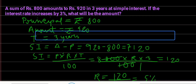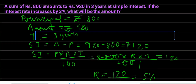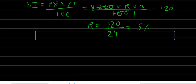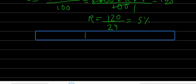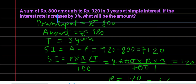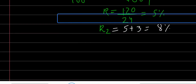The question states that if the interest rate increases by 3 percent, the new rate R2 equals 5 plus 3, which is 8 percent.